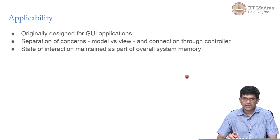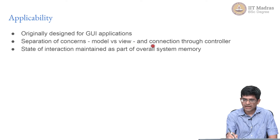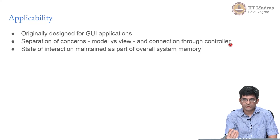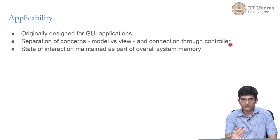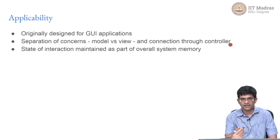Let us think about the applicability. The MVC model was originally designed for GUI applications, and the main idea as I said was this separation of concerns — we have a model, a view, and they are connected through a controller. What happens in a typical GUI application running on a Windows laptop or Linux desktop is that there is some concept of the state of the interaction. Whatever is being displayed on screen is done by a program which knows exactly what is there, what you are likely to click on, and there are certain limits on what you can do at that point in time. The MVC model was built around that concept — the fact that there is a state determined by the underlying system and that the controller is the direct link between the view and the model.